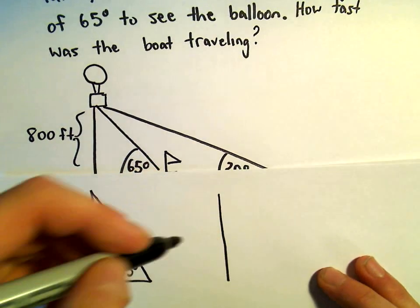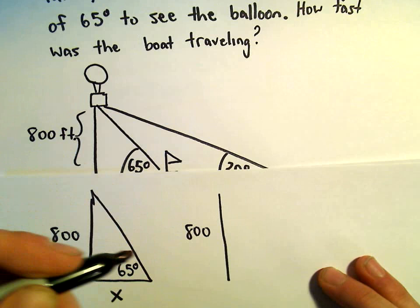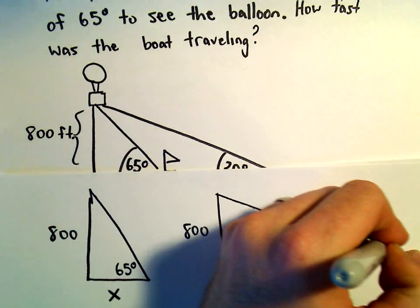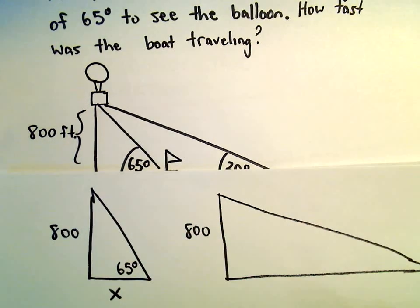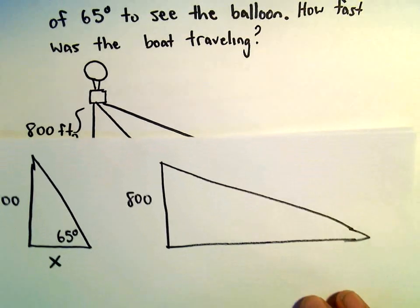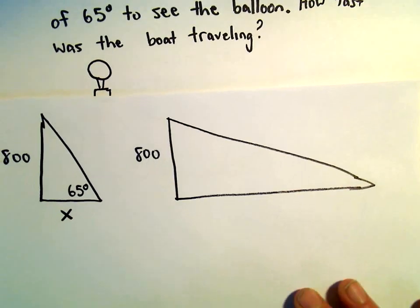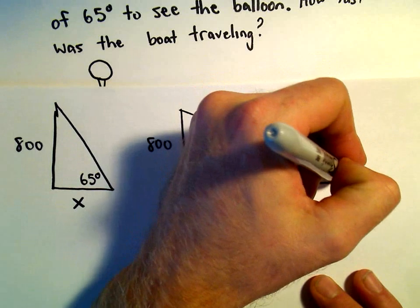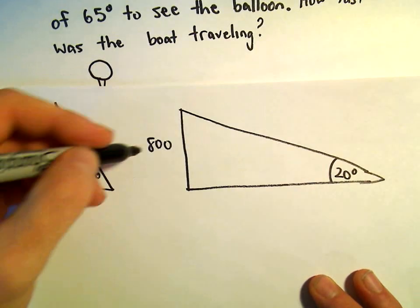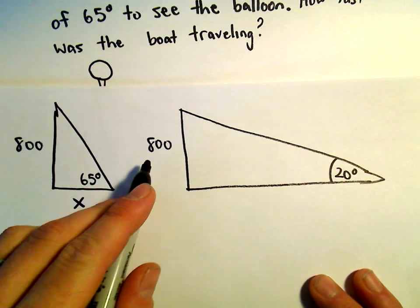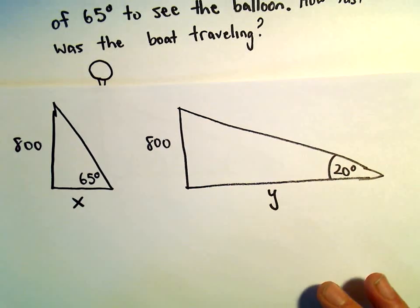At the start of the problem, the boat is a bit further out there, and we said that was an angle of 20 degrees. There it is, our angle of 20 degrees. But again, we know that we're at a height of 800, so maybe we can call that distance y.